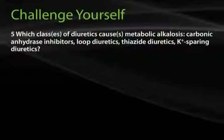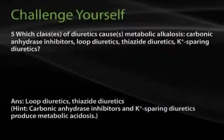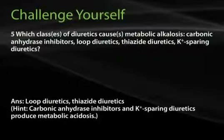Question 5: Which classes of diuretics cause metabolic alkalosis — carbonic anhydrase inhibitors, loop diuretics, thiazide diuretics, or potassium-sparing diuretics? The answers are loop diuretics and thiazide diuretics. Carbonic anhydrase inhibitors inhibit bicarbonate reabsorption in the proximal tubule, causing metabolic acidosis. Potassium-sparing diuretics inhibit potassium and hydrogen secretion in the collecting duct, thereby leading to a metabolic acidosis.